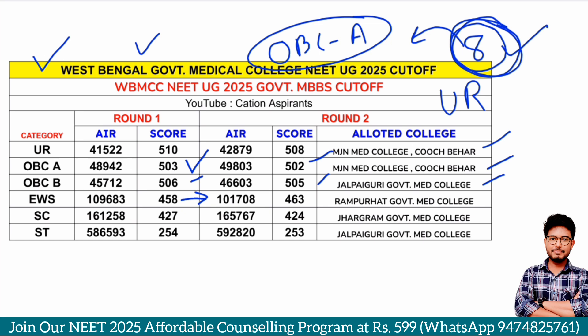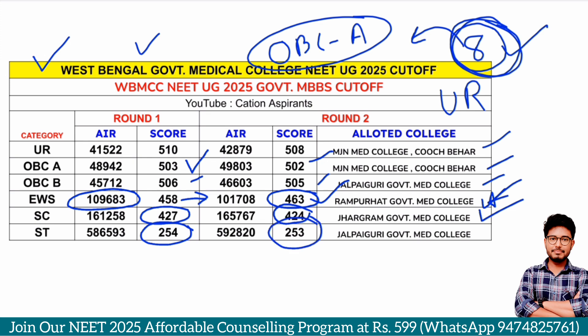EWS category cut-off was discussed in the previous video and is notably high. EWS category Round 1 cut-off is 458 marks, and Round 2 is 463 marks — Round 1 is higher than Round 2. The last allotted college is Rampurhat Government Medical College. Another category Round 1 is 427 marks, Round 2 is 424 marks. EWS cut-off is 254 marks for Round 1 and 253 marks for Round 2, with Jalpaiguri Government Medical College as the allotted college.